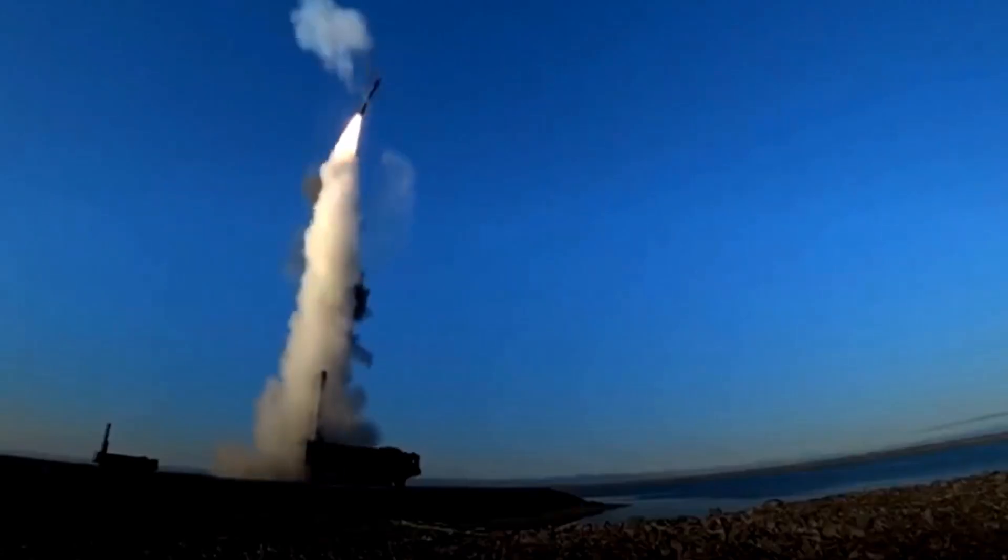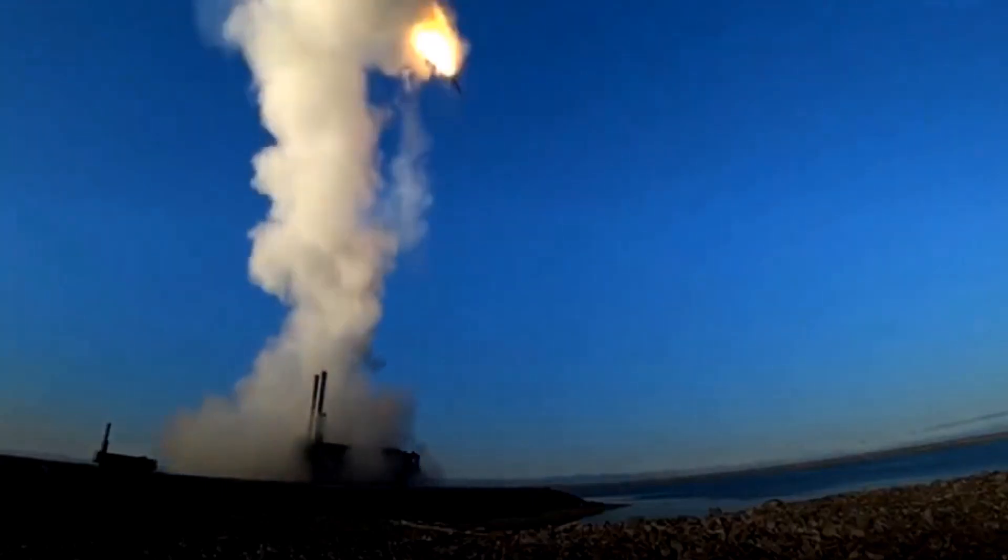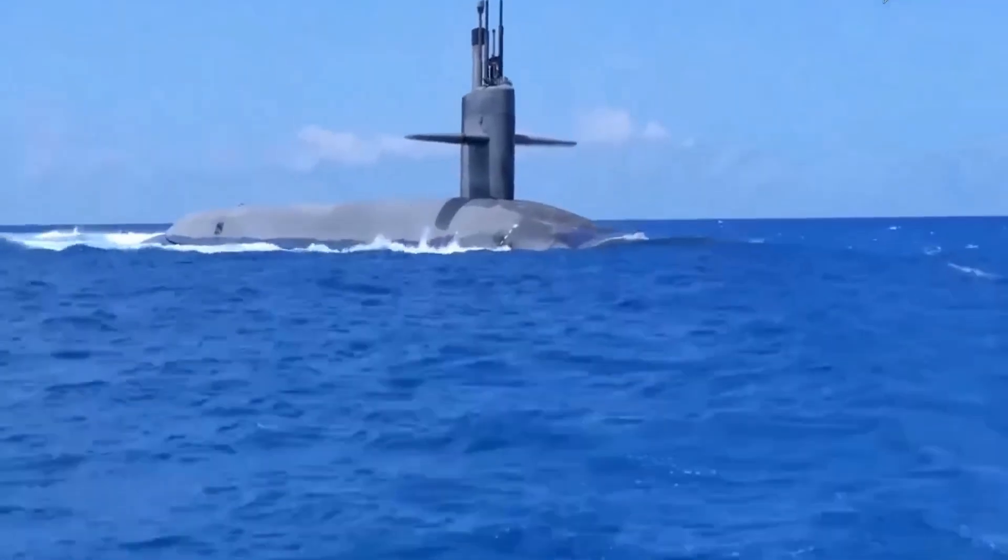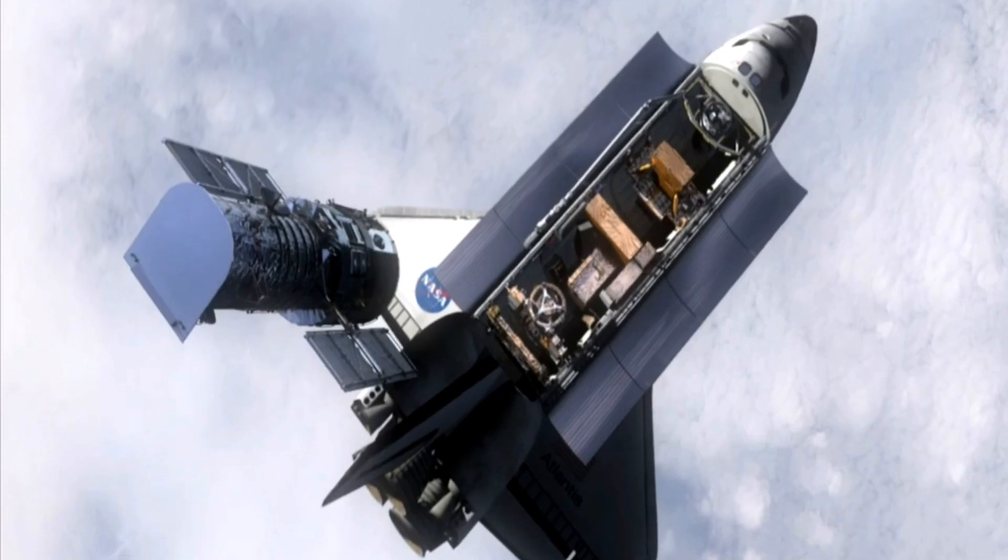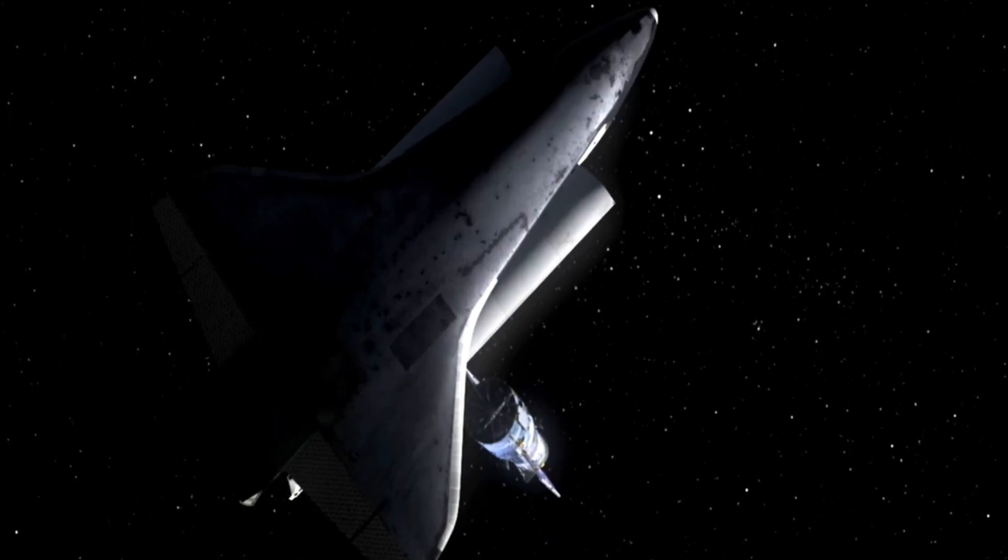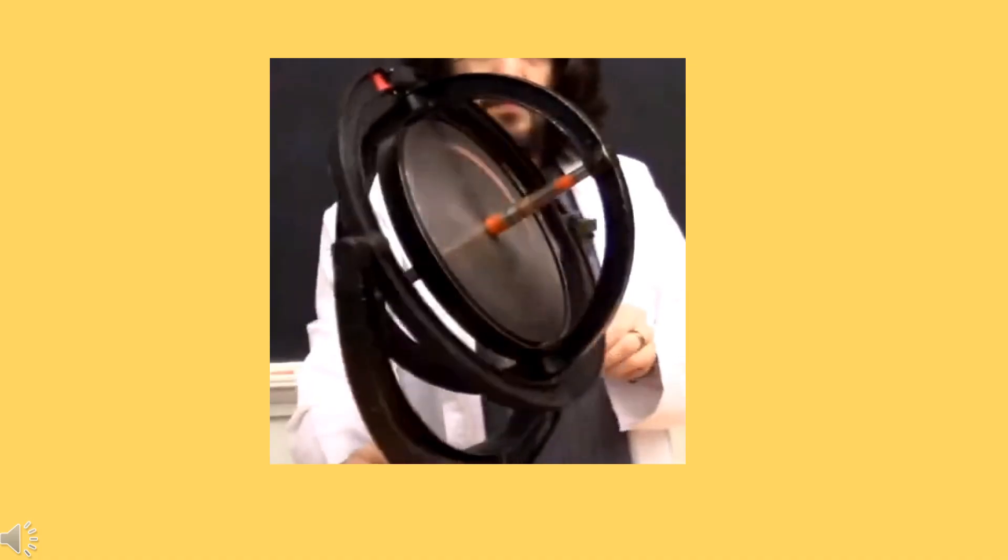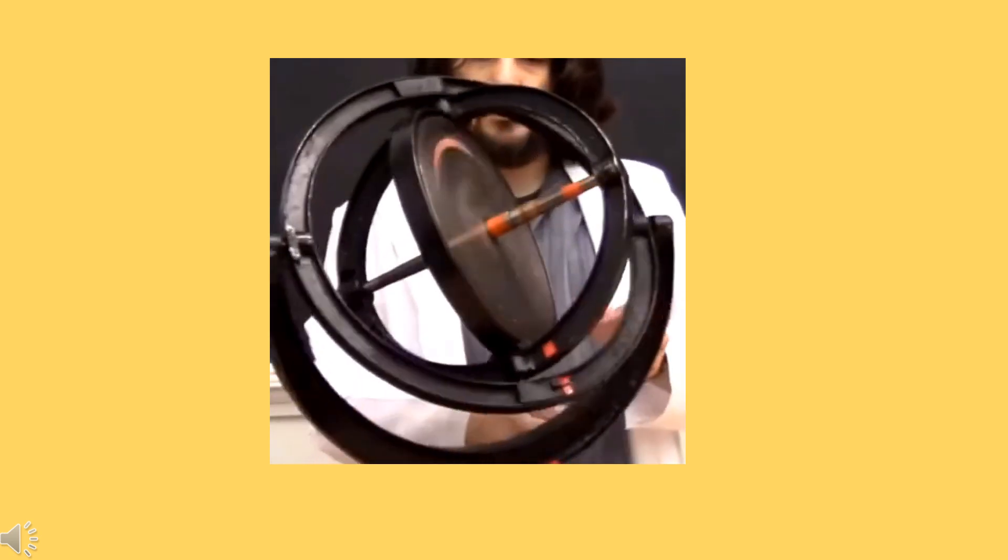This type of inertial guidance system is used in missile systems, in Hubble Space Telescope, and even in submarines where using other types of guidance systems is difficult. Now we understand how to determine the direction of the torque and angular momentum. Let us jump into the understanding of the gyroscopic effect.